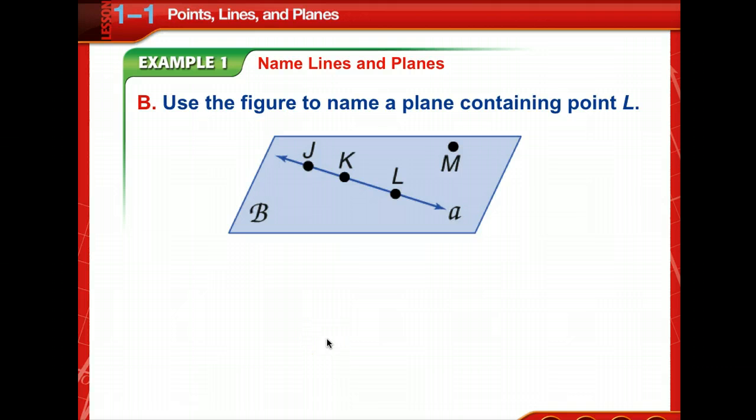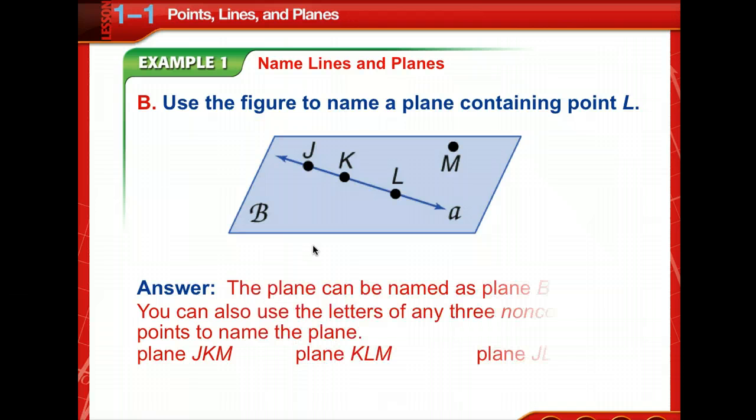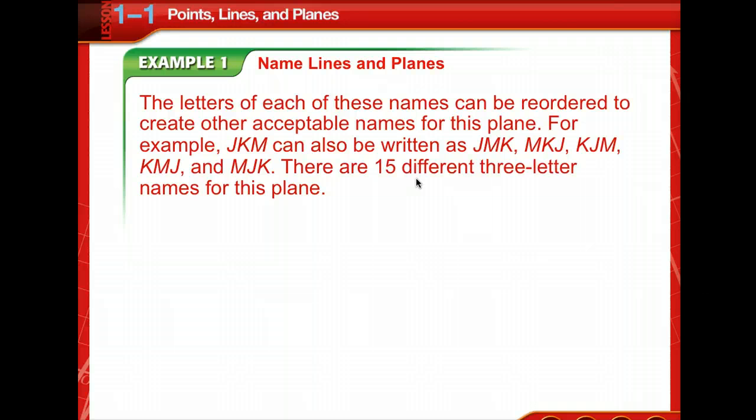Now they want us to use the figure to name a plane containing point L. So we're naming the plane. So it's plane B. Or we can use the letters of any three non-collinear. So we can't name it using these three because they lie on the same line. The points have to be non-collinear. So that's why we name it JKM or KLM or JLM. M is included because it does not fall on that line. It's non-collinear. And that's needed to name that plane. So two of the points can be on the same line. But the other point must be not on that line. It must be non-collinear. And they list all the letters, the ways that you can name it. There are actually 15 different three-letter names for this plane.